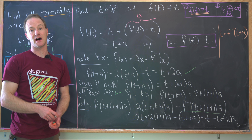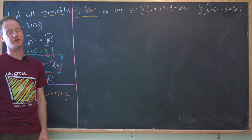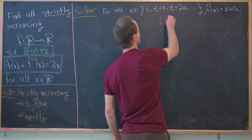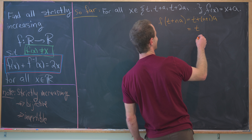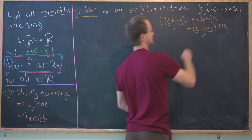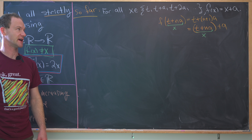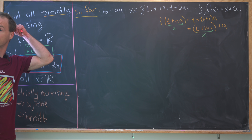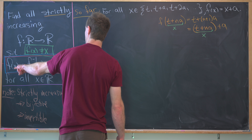From the last board, for all x in the set {t, t+a, t+2a, t+3a, ...}, we have f(x) = x + a, because f(t + na) = t + (n+1)a = (t + na) + a. Now we want to move backwards to the left — to see what happens at t − a, t − 2a, and so on. We can do that by rewriting the equation as f inverse of x = 2x minus f(x).